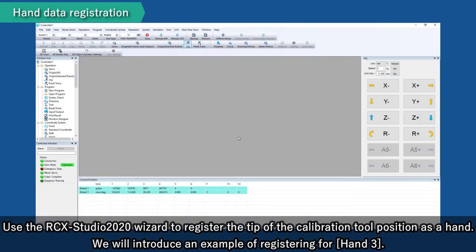Use the RCX Studio 2020 wizard to register the tip of the calibration tool position as a hand. We will introduce an example of registering for hand 3.